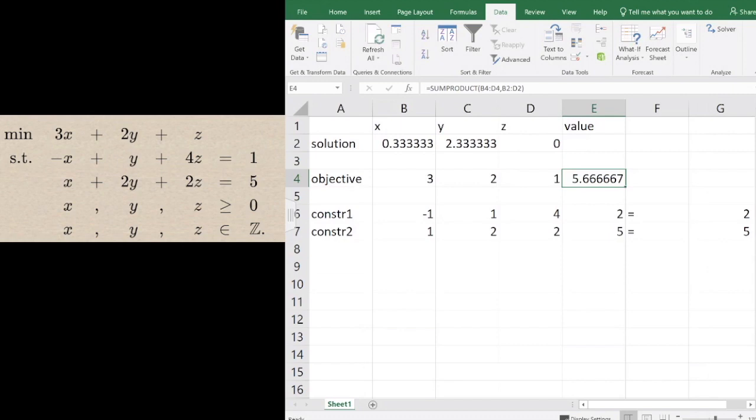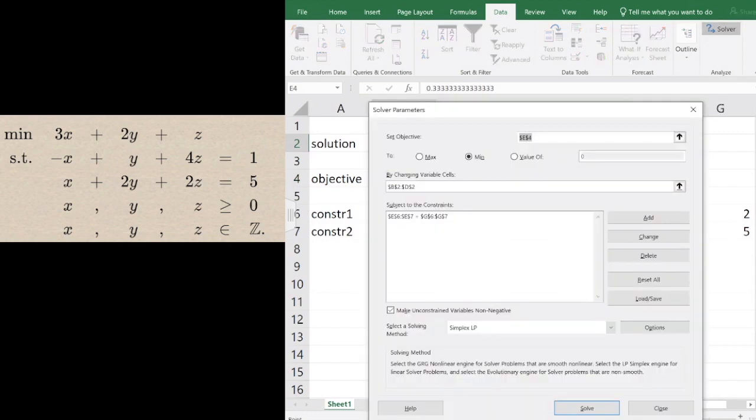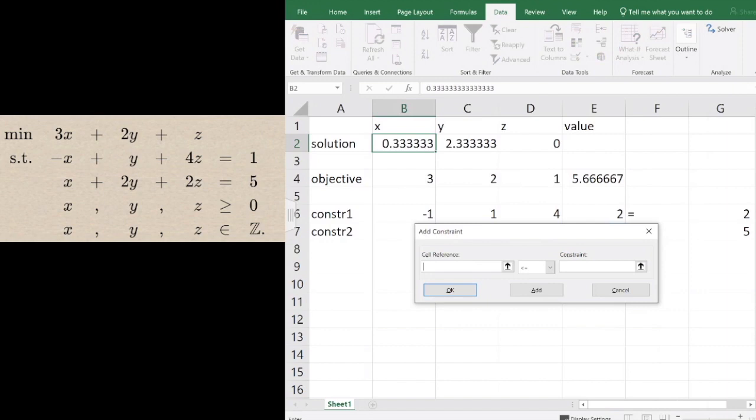This time we get fractional values. This is only an optimal solution for the linear programming relaxation. To solve the problem as an integer linear programming problem, we have to specify extra constraints. We're going to add another constraint requiring these cells to be integers.